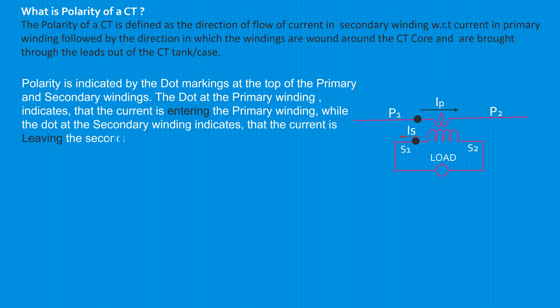The polarity marks on a CT designate the relative instantaneous directions of the current — that is, for a given direction of primary current entering, what should be the direction of secondary current leaving.